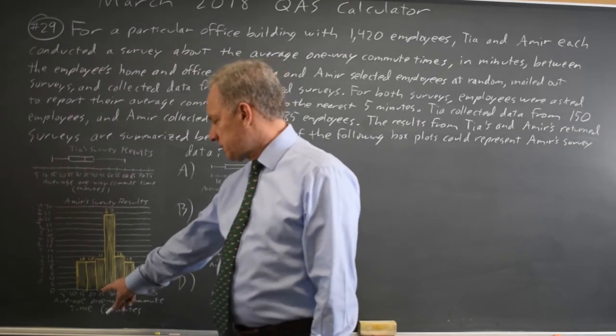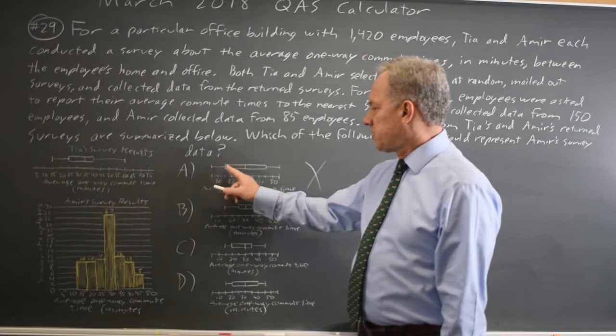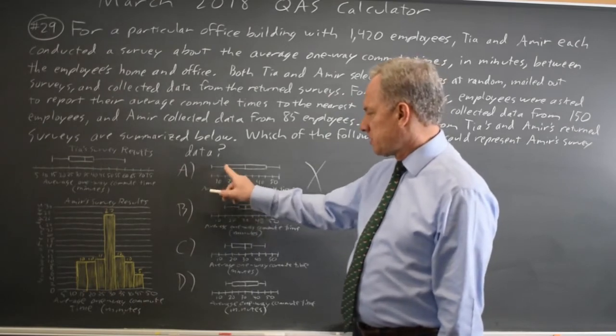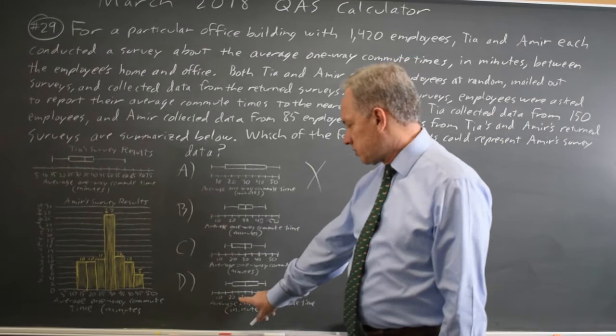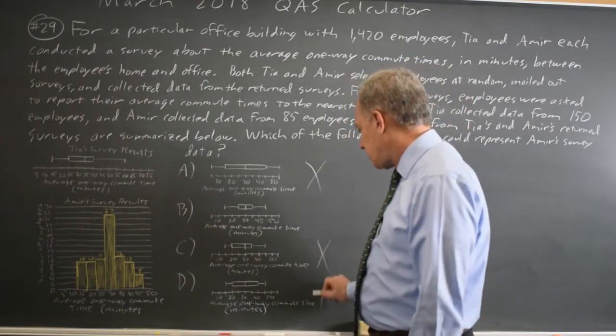The 21st value is at 25, so the wide section of the rectangle should be at 25. This is at 15, this is at 25, that's at 20, this is at 20. Since C and D both have the first quartile at 20, they're wrong.